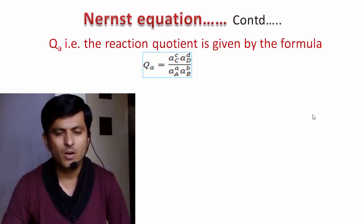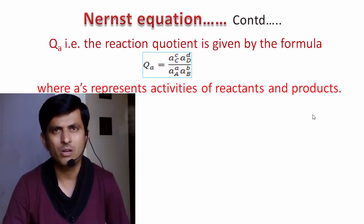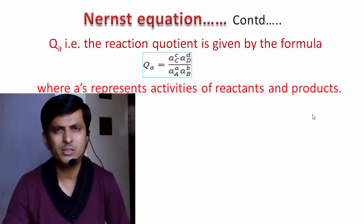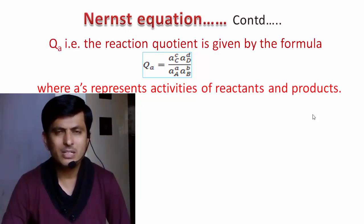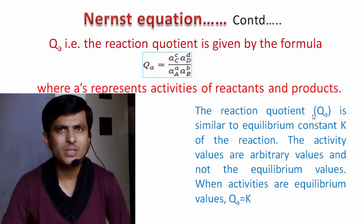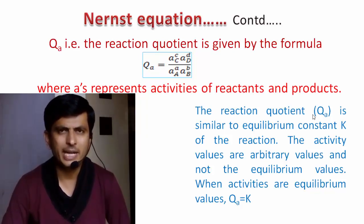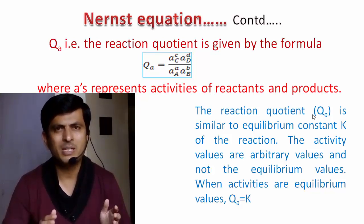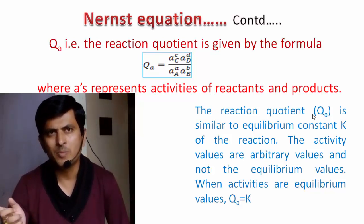In this formula, A represents the activities of reactants and products. In short, the reaction quotient QA is the ratio of activities of products divided by activities of reactants, and QA is similar to the equilibrium constant K. The activity values are arbitrary and not equilibrium values, but when the activities become equilibrium activities, then QA becomes equal to the equilibrium constant K.